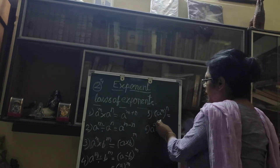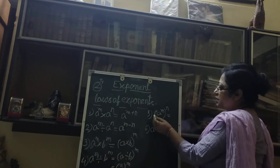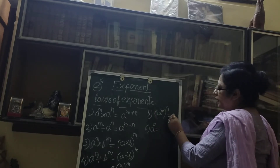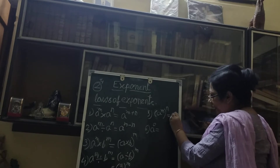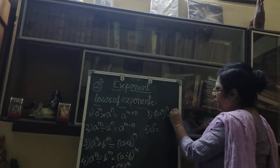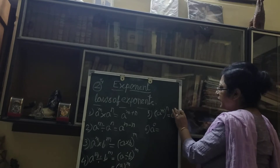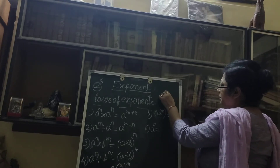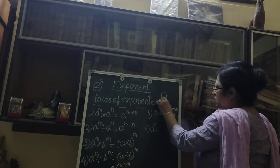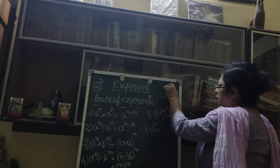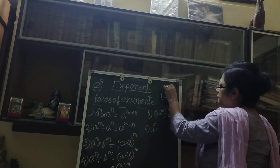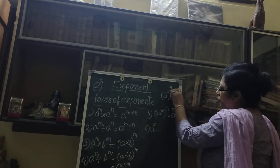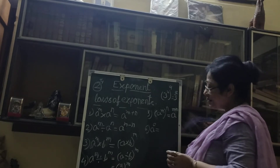Now number 5: a to the power m, whole to the power n. Here we will keep the base a and multiply the powers — that is m into n, giving a to the power m×n. For example, 3 squared whole to the power 4: we write 3 to the power 2×4, which is 3 to the power 8.